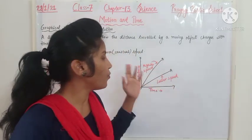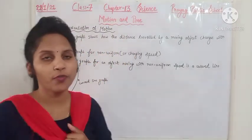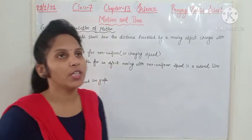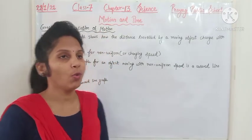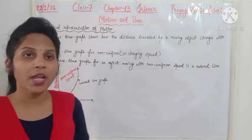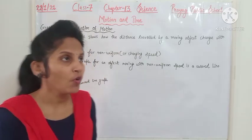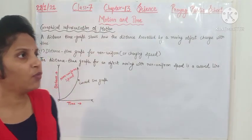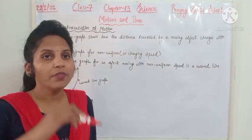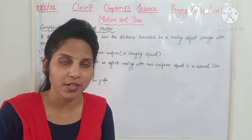The second type of graph is the distance-time graph for non-uniform or changing speed. The distance-time graph for an object moving with a non-uniform speed is a curved line. In non-uniform motion, an object covers unequal distances in unequal intervals of time, so the graph will be a curved line. If a distance-time graph shows a curved line, that means the object is moving with non-uniform motion and its speed is not constant.